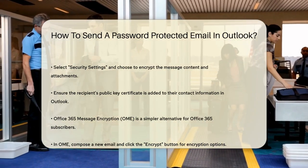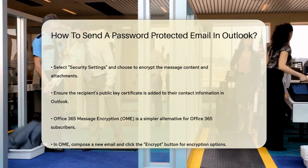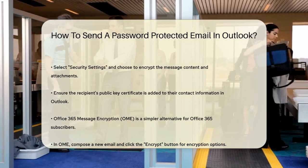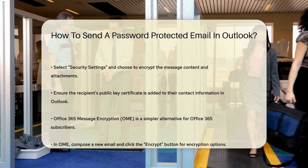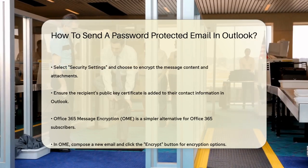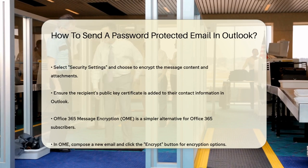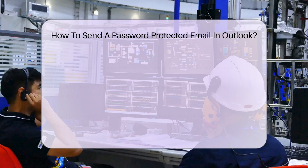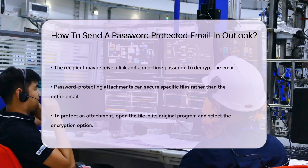Compose a new email and go to the Options tab. Click the Encrypt button. You'll see options like Encrypt Only or Do Not Forward. Choose the encryption option you need and finish composing your email. When you send the email, it will be encrypted.